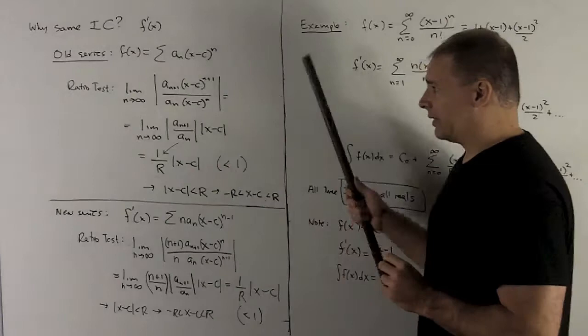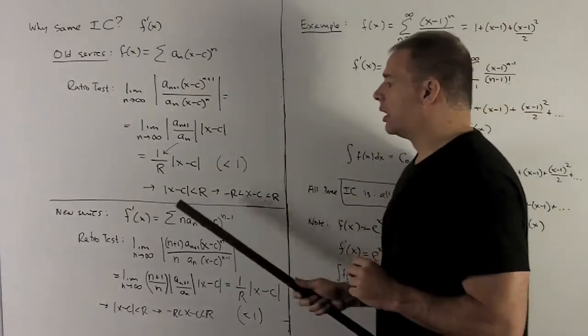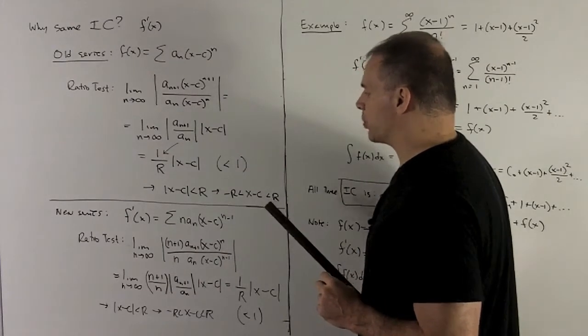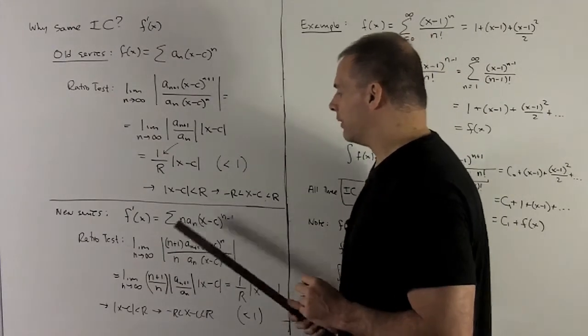So this is how you get your interval of convergence centered at c with radius equal to r. Let's replicate this with the derivative. My derivative is going to be given by bringing the n down and then taking one off the exponent.